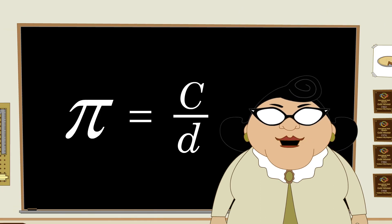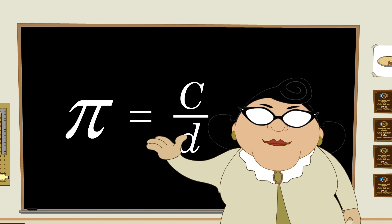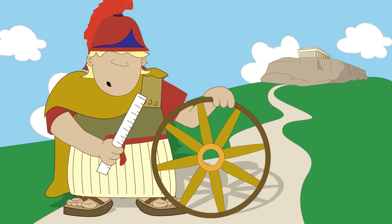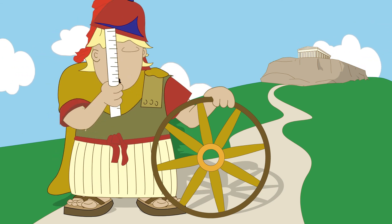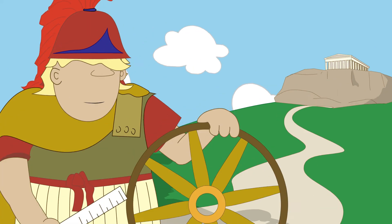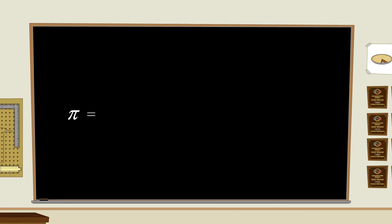For many centuries, people measured circles but could never determine exactly what this ratio was to an accuracy of more than a few decimal places. But, with the help of an infinite series, we can determine pi to any degree of accuracy we like.